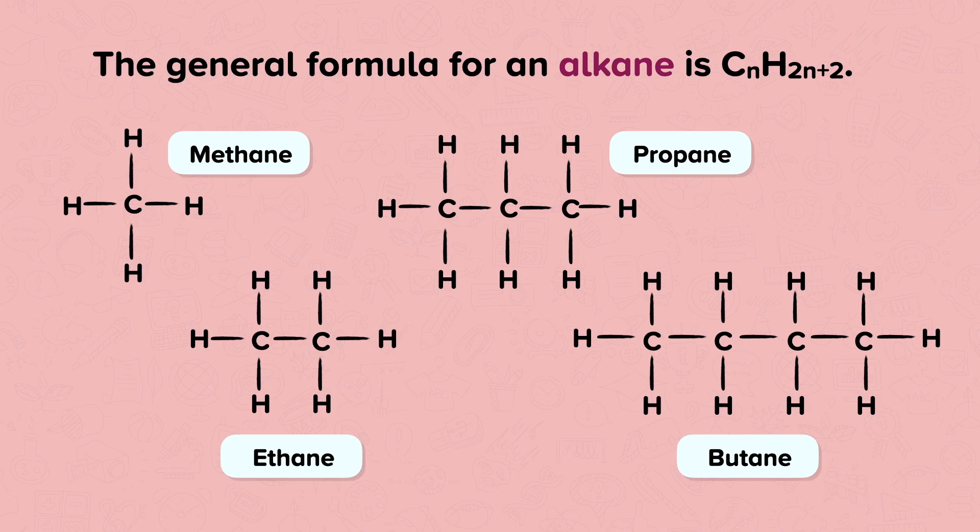Ethane has one additional carbon and two hydrogen atoms compared to methane. Propane has one additional carbon atom and two hydrogen atoms compared to ethane.